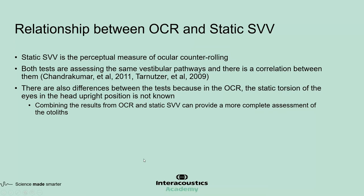There's a relationship between the OCR test and the static SVV test. Static SVV is basically the perceptual measure of static torsion that's measured during the OCR. Both tests are assessing the same vestibular pathways, and a study from 2009 establishes a correlation between them, also confirmed by a study from the Hopkins group. In the OCR, the static torsion of the eyes in the head upright position is measured only after the lesion.